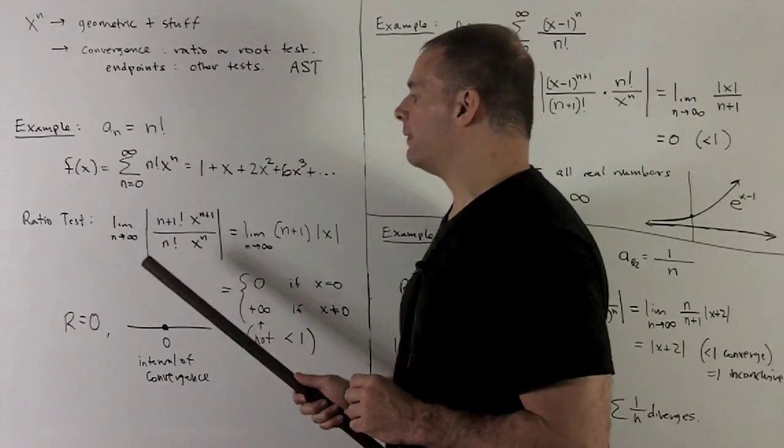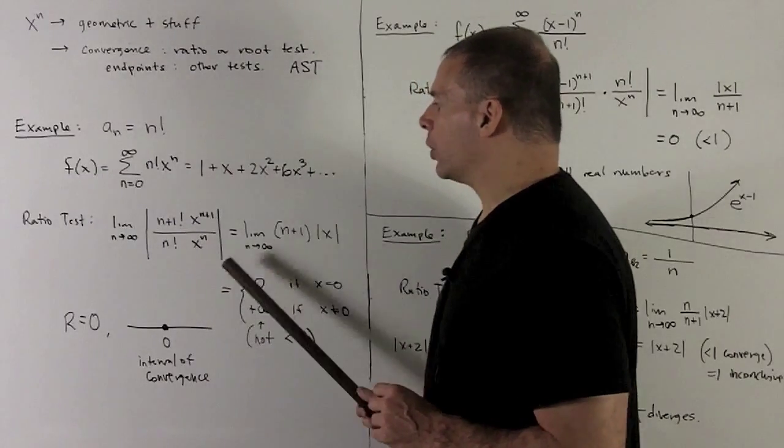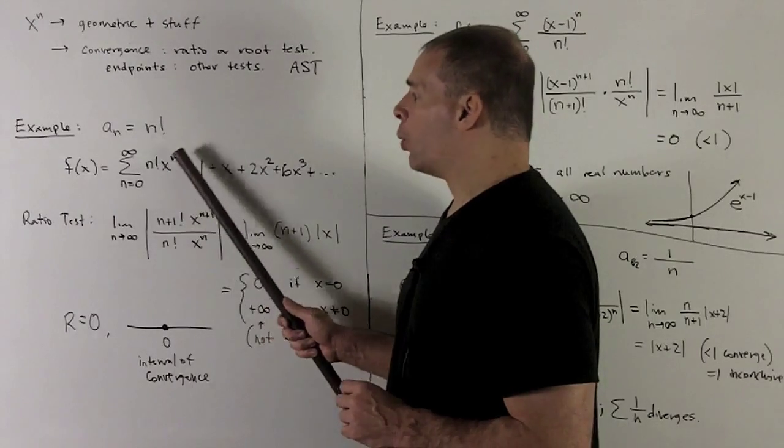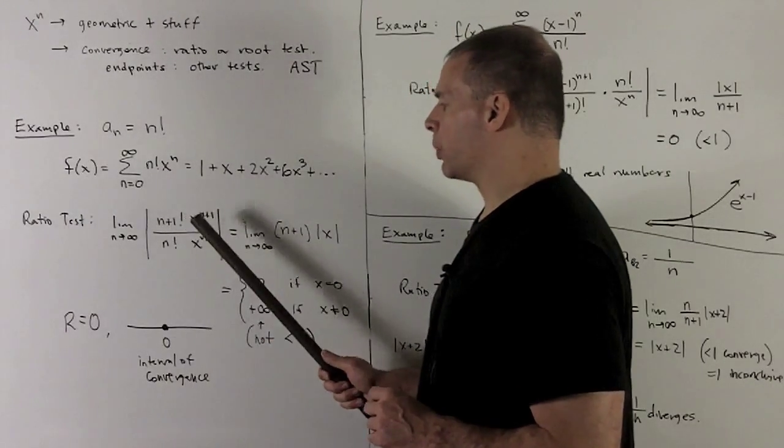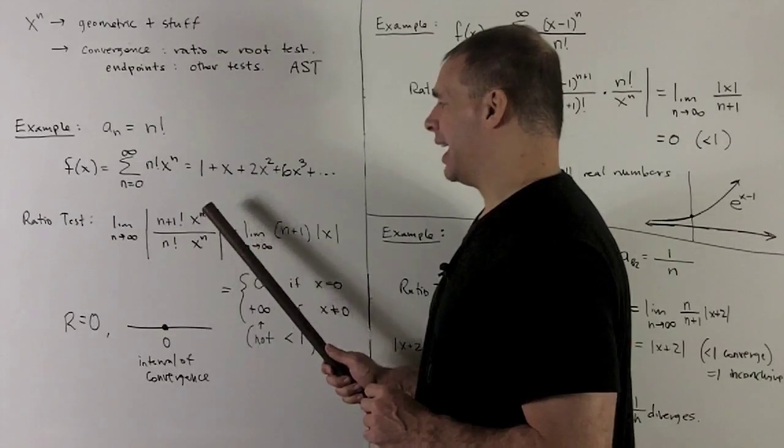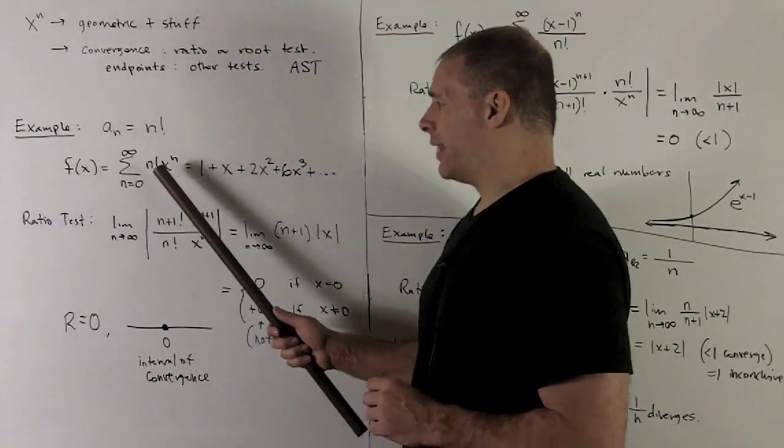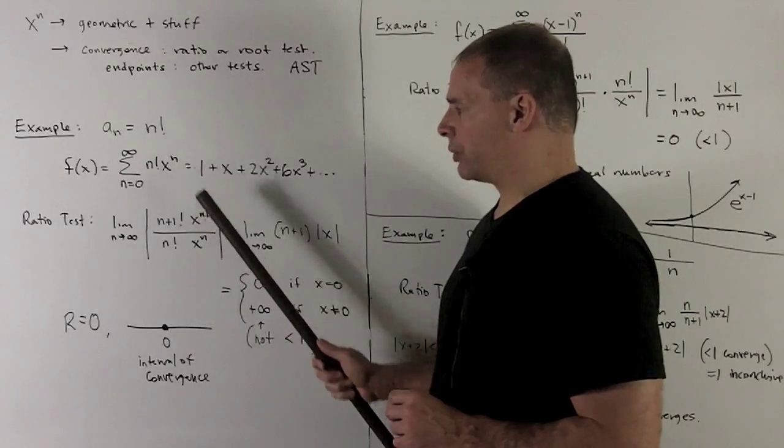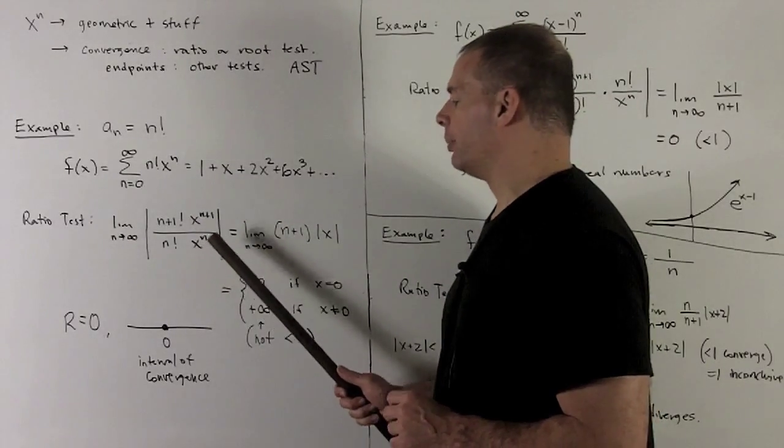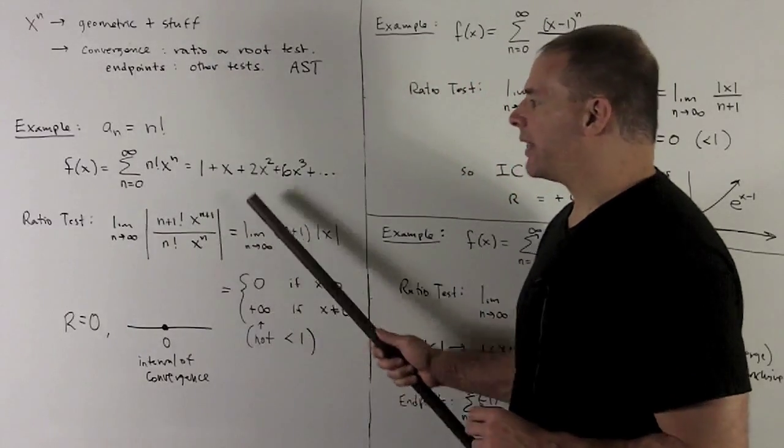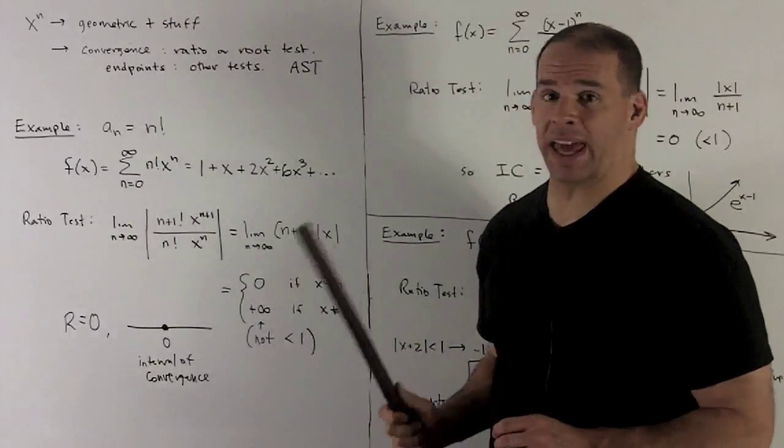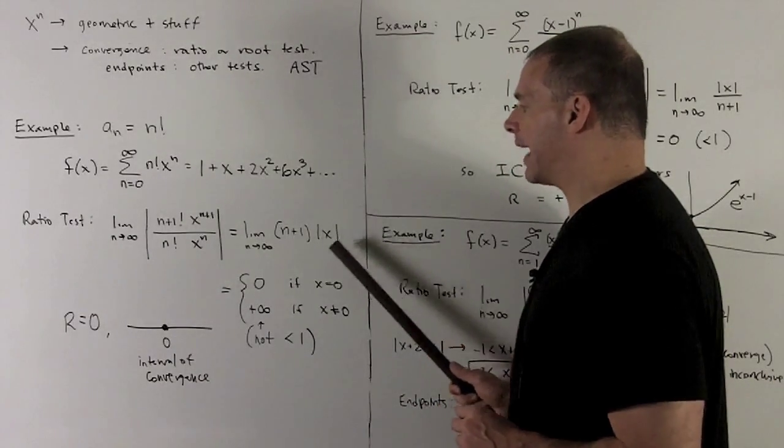So we're going to have limit n going to infinity, we'll take the absolute value of, take our sequence, add one to it. So it's (n+1) factorial times x to the (n+1). And then we divide by the term in our sequence, which is just at n. So it's n factorial x to the n. We simplify this. So if I have x to the (n+1) over x to the n, that's just going to give me an x. We hang on to the absolute value.